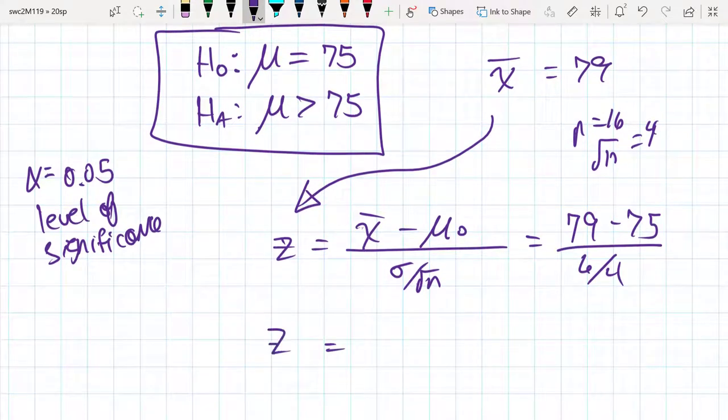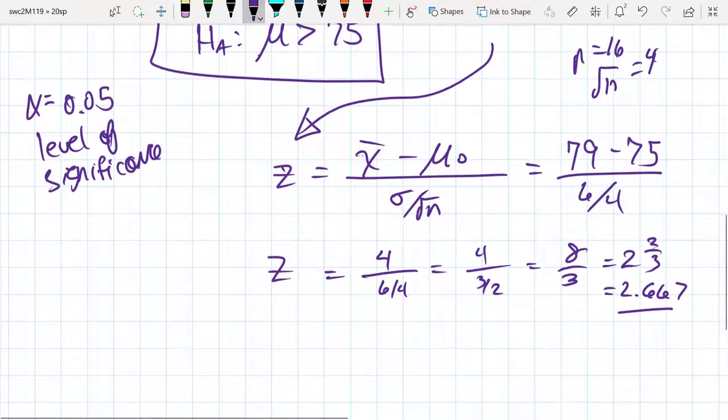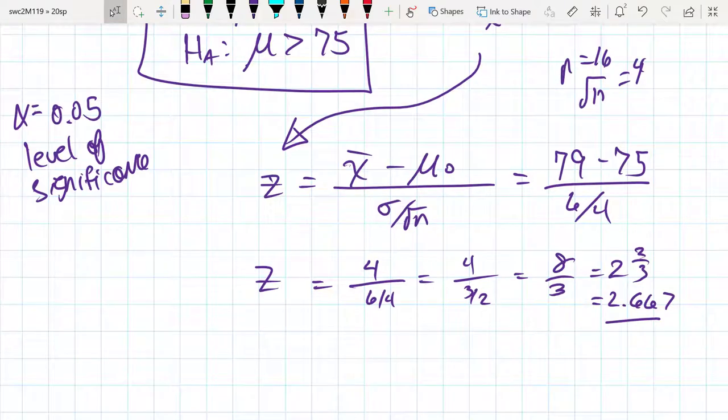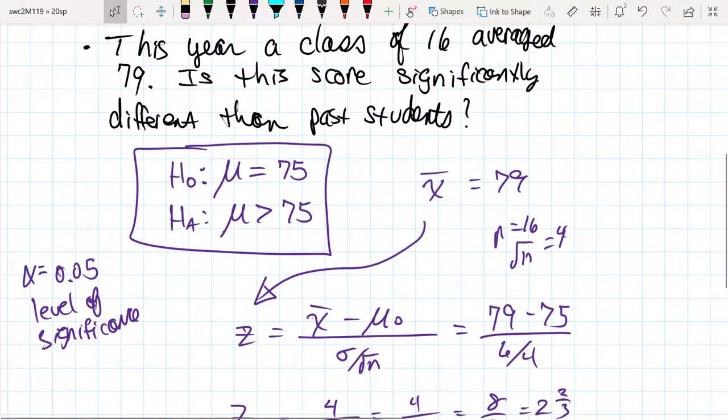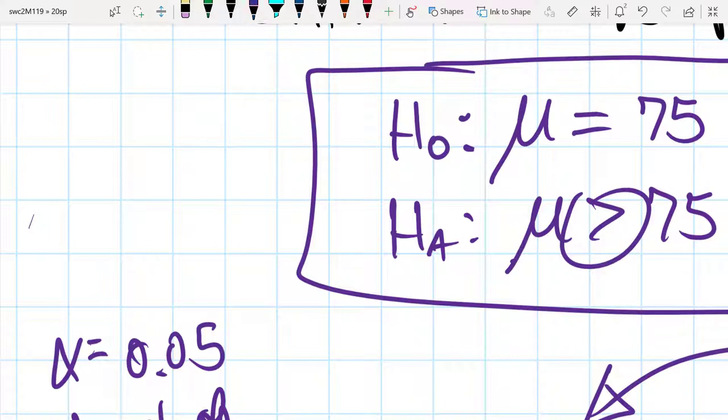So our test statistic is 4 divided by 6 over 4, which is 4 divided by 3/2, or 8/3, or 2 and 2/3. So our test statistic is 2.667. Now remember, we're going to look at this at the α = 0.05 level of significance, and it's a right-tailed test.